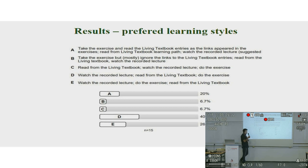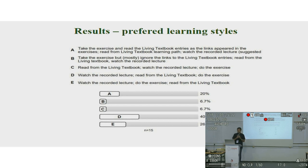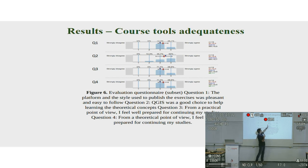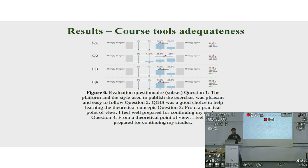So, what were the results? Each of these represents one learning style — it doesn't matter which one — what matters is that there is no clear dominance. That tells us that everyone is different, so it's only natural that people prefer to learn in different ways. Another important outcome is that students were satisfied with QGIS and the living textbook. Students were generally happy with it and felt well prepared.